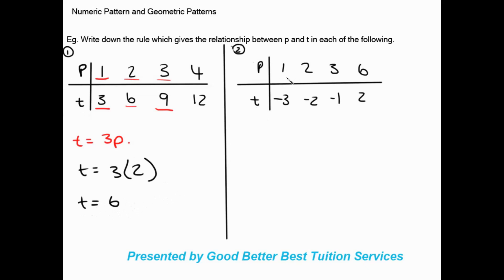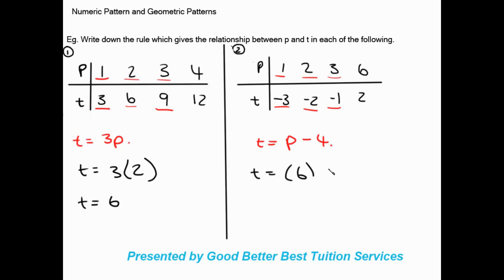For the next table, what was done to 1 to get -3? Subtracting 4: 1 - 4 = -3. Check: 2 - 4 = -2, 3 - 4 = -1 — confirmed. The rule is t = p - 4. To verify, substituting p = 6: t = 6 - 4 = 2, which matches the table. So we've found the rule for this numeric pattern.